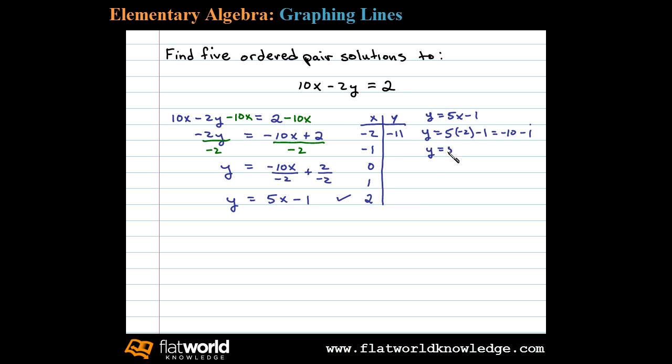Continuing, 5 times negative 1 minus 1 is negative 5 minus 1, or negative 6. Substituting 0 in, 0 times 5 minus 1 is negative 1, leaving us with negative 1.